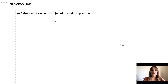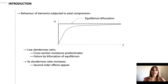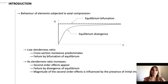At low slenderness ratio, the behavior of a member under pure compression is governed by its cross-section resistance. The failure occurs by equilibrium bifurcation. As the slenderness ratio increases, second-order effects appear and failure occurs by equilibrium divergence. The intensity of these second-order effects is influenced by the presence of initial imperfections.